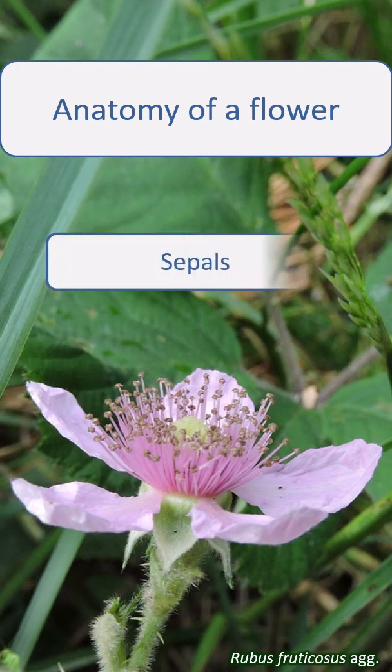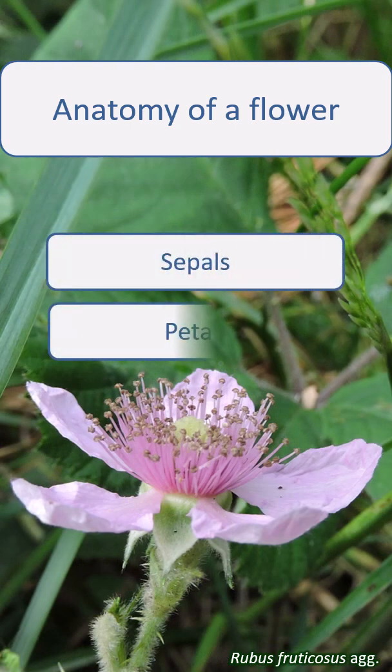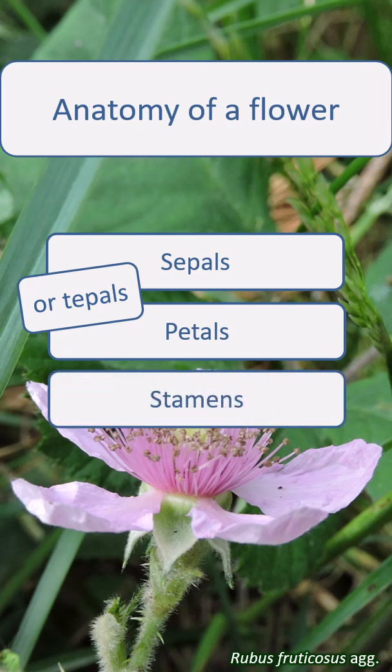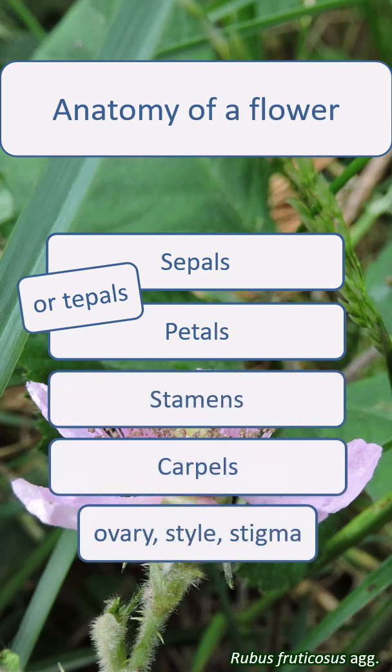Different species of plant have variations on this typical flower structure, but they all have more or less the same parts.